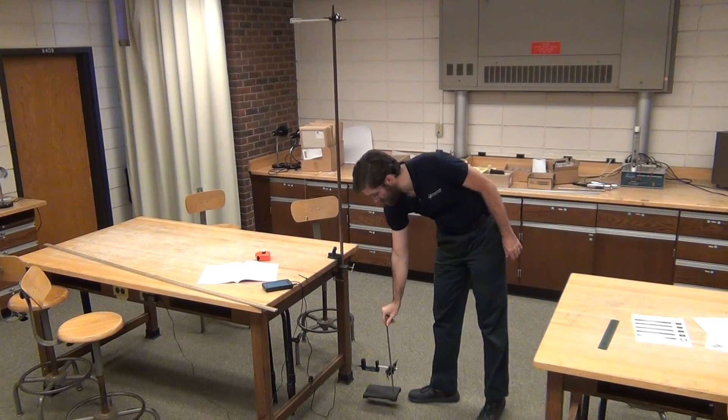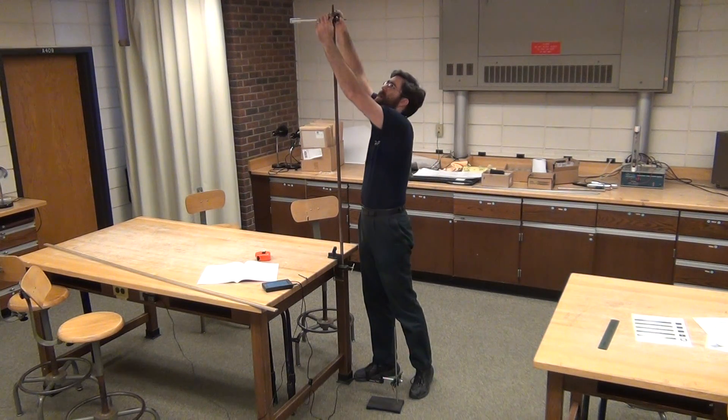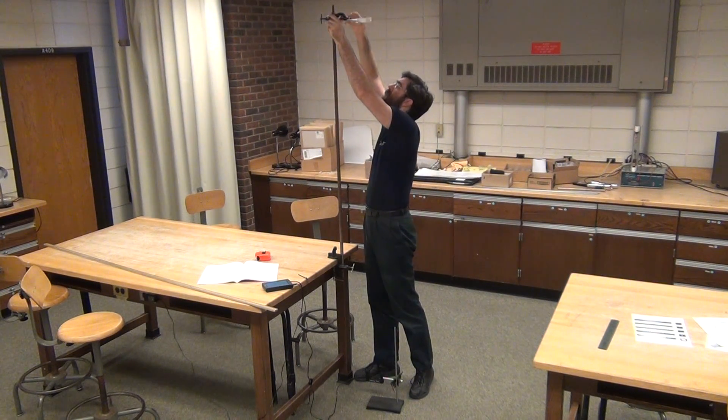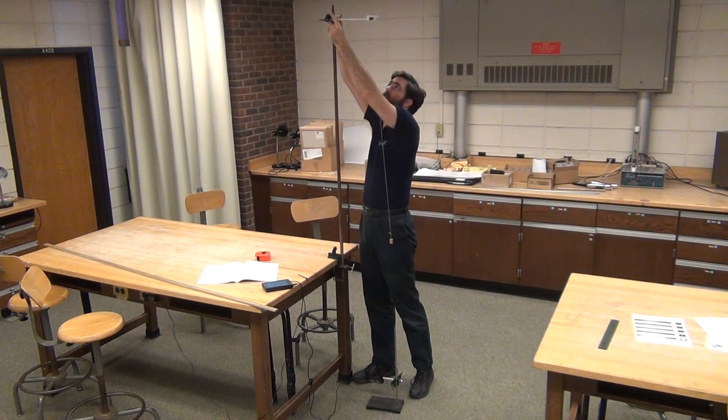You're going to take one of the photo gates, put it down on the bottom, and then you'll adjust the pendulum to hang off the edge of the table.